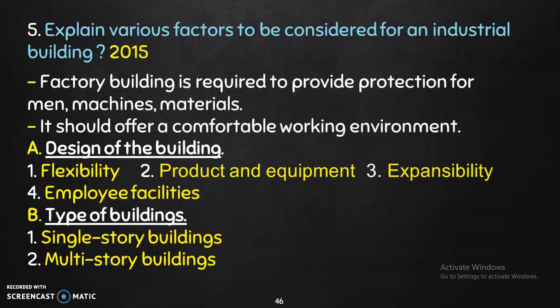Employee facilities include welfare facilities, canteen, restroom, etc. We design single-story or multi-story buildings based on available land and capital. All production facilities can be placed in a single-story building if land is available. Multi-story buildings are used when land is limited. Single-story is best for natural light. That covers the types of buildings.